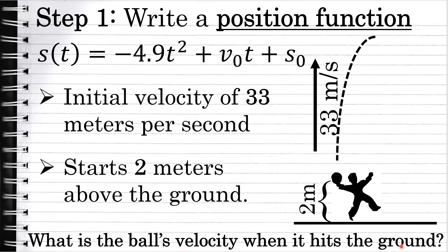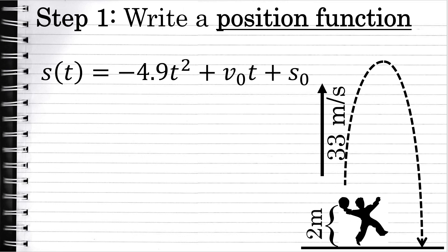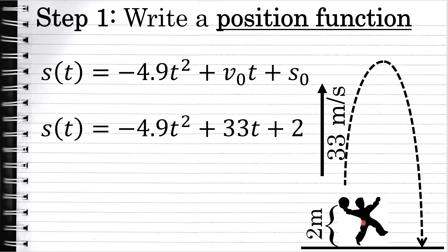We're going to find the ball's velocity when it hits the ground, but the first step is to use the given information to write a position function. Because the initial velocity is 33 meters per second, we'll fill that in as the coefficient on t to the first power. And because the initial position is 2 meters — the ball starts 2 meters above the ground — that will be s sub 0, the constant at the end of the position function.